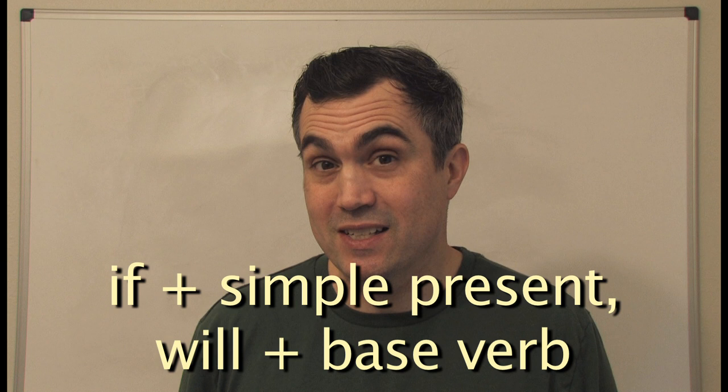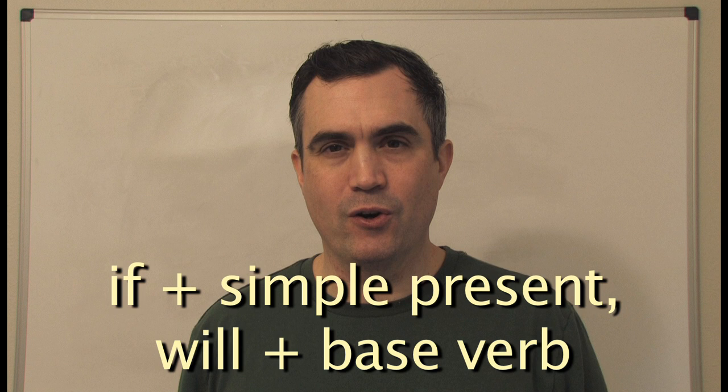Let's summarize: the first conditional uses 'if' with the simple present, then 'will' and the base verb. It talks about a real possibility in the future — if this condition happens, this will or won't happen. For example: if Teacher Tom posts more videos, I will learn English faster.